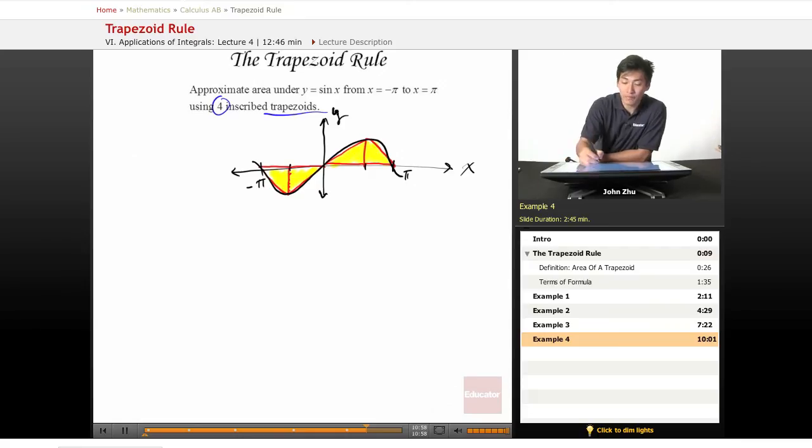And also, by just looking at this graph, we can tell that the area is going to equal zero, because here's our positive a, here's our negative a. When we add them together, we get zero.